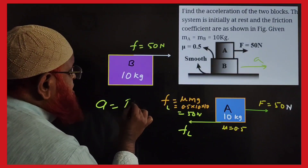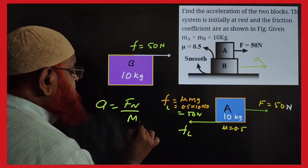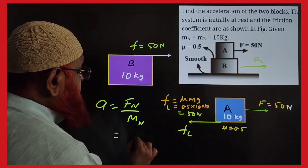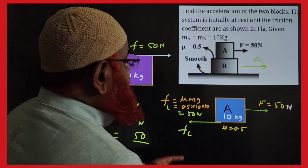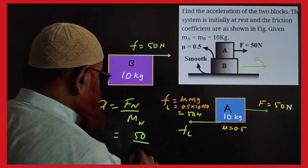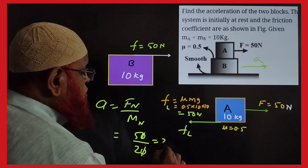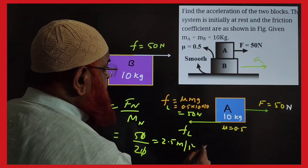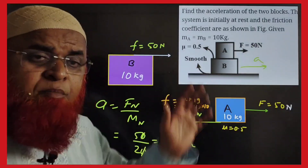The acceleration is the net force divided by the net mass. The net force applied is 50 N, and the net mass is 10 kg plus 10 kg, which equals 20 kg. So the acceleration is 50 divided by 20, giving 2.5 meters per second squared for the combined blocks.